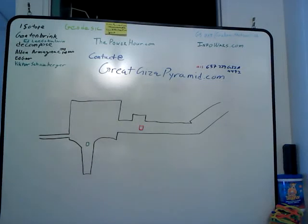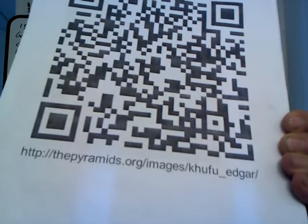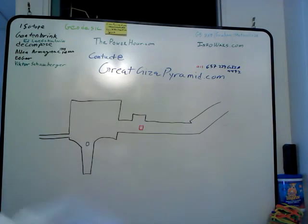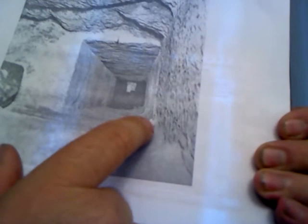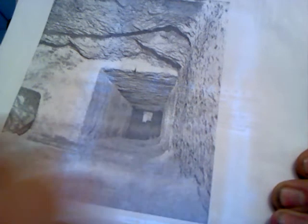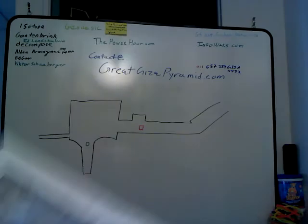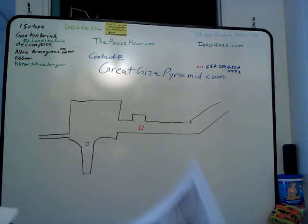Hello world, GreatGizaPyramid.com. What you're looking at is the subterranean chamber, and if you go to this website we can get some other pictures to help discuss today. First off, this is documenting the piles of dirt and the frequency. When you go to that website you can find this picture. We've got a flat surface here, and then a rough surface from there back to the section before the rock — the pre-subterranean chamber.